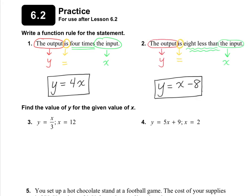Okay, so you need to check your answers. For number 1, I got y equals 4 times x, or just 4x. Number 2 is y equals x minus 8. Remember, this is not 8 minus x because 8 is being subtracted off of the input, so it has to go after it like that.